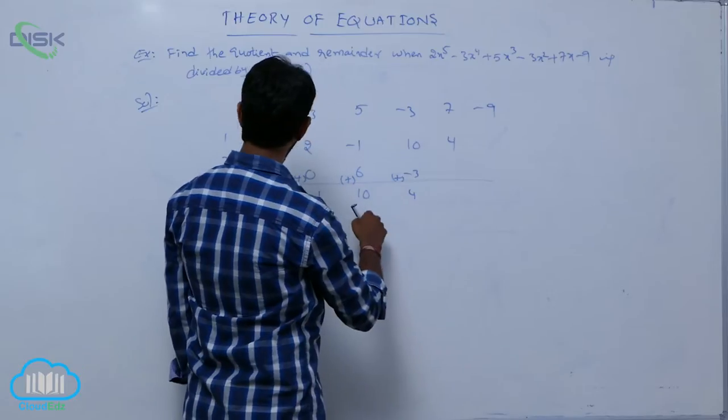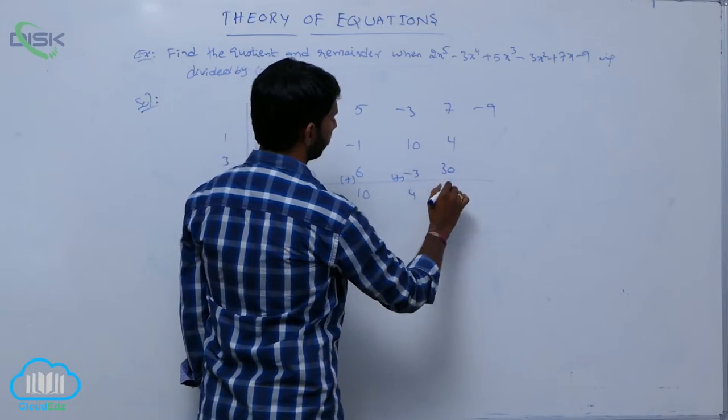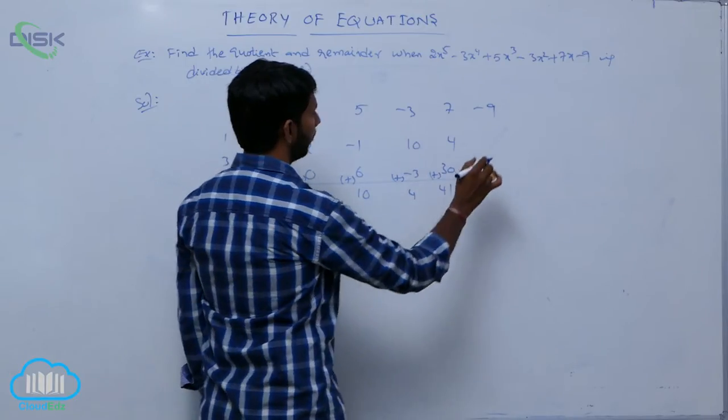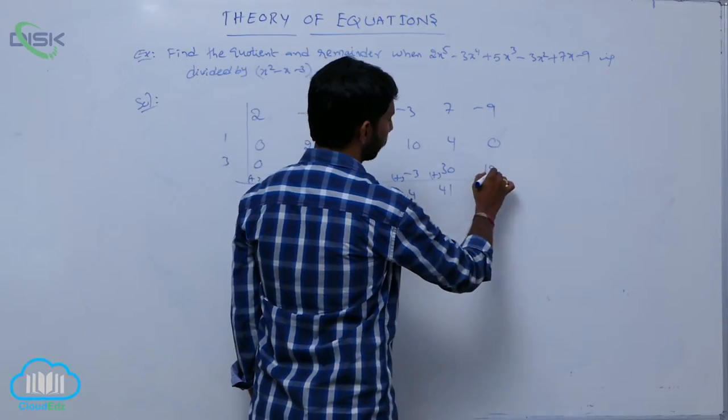4 into 1, 4. 10 into 3, 30, is equal to 41. And next one, 0, and 4 into 3, that is equal to 12.